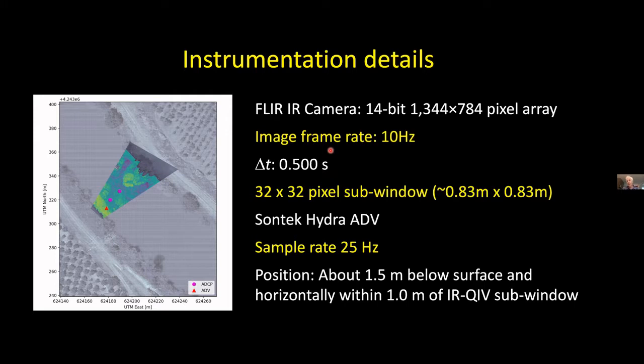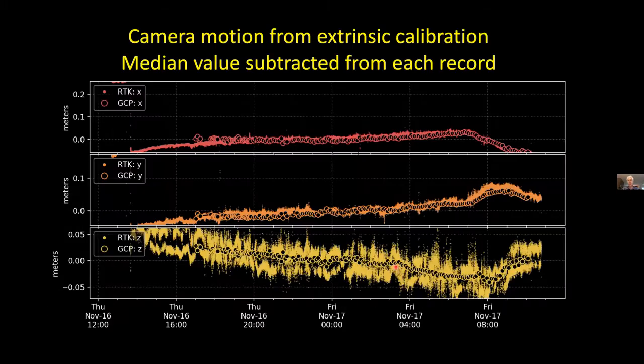Turns out for this flow, five frames or 0.5 seconds is optimal. That number is going to come back and bite us in a minute in an interesting way. We're working with 32 by 32 pixel sub windows. As Seth will talk about, we're actually doing the correlation before orthorectification and then only rectifying the position of the vectors, not the entire image - computationally much more efficient. We found that the accuracy is comparable. We're working with the Sontek Hydro, much like Blair was, to sample in the water. We're about 1.5 meters below the surface and about one meter horizontally from the IR-QIV sub window - so close but not exactly the same spot.